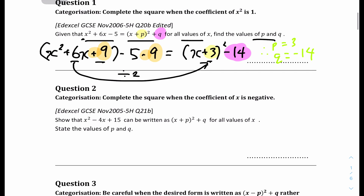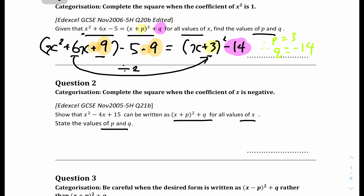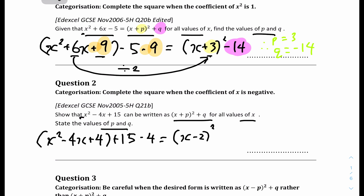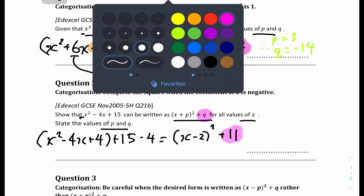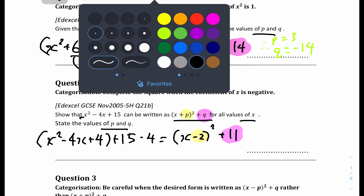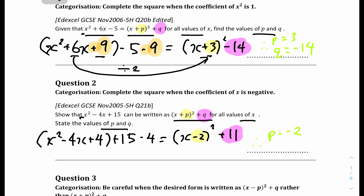Question 2 shows that x squared minus 4x plus 15 can be written as x plus something squared plus q, for all values of x — find p and q. The coefficient of a is also 1, so it's the standard completing the square. x squared minus 4x — isolate the c coefficient. The new c is minus 4 divided by 2, which is minus 2. Minus 2 squared is 4. So 4 on the inside and minus 4 on the outside. x squared minus 4x plus 4 factorizes to x minus 2 squared. And plus 15 minus 4 is plus 11. Therefore p equals minus 2 and q equals 11.